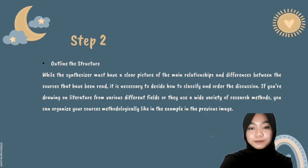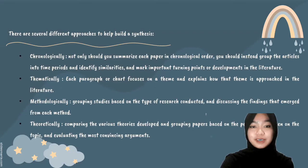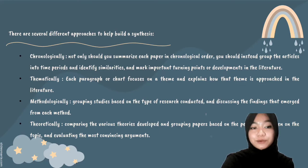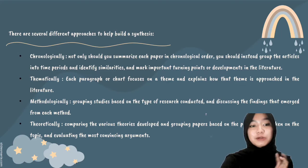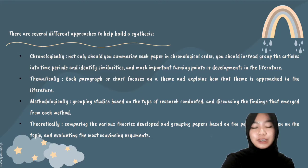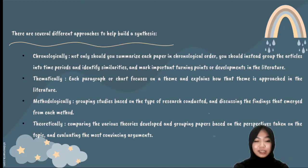There are several different approaches to help with synthesizing. The first is chronologically — you should group articles into time periods and identify similarities and mark important turning points or developments in the literature. The second is thematically, where each paragraph or section focuses on a theme and explains how that theme is approached in the literature. The third is methodologically, grouping studies based on the type of research conducted and discussing the findings that emerge for each method. The fourth is theoretically, comparing the various theories developed and grouping papers based on the perspective taken on the topic, then evaluating the most convincing arguments.